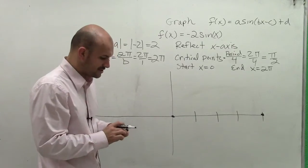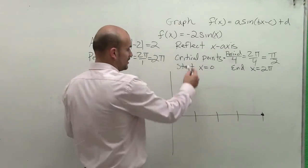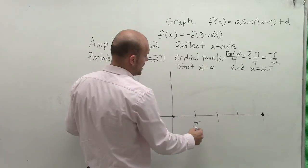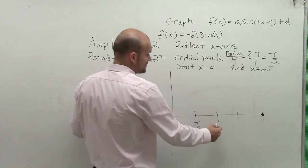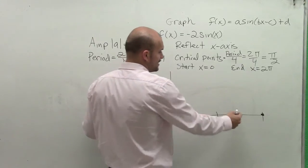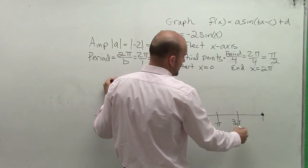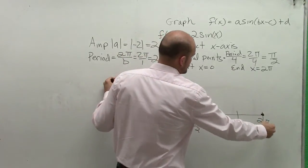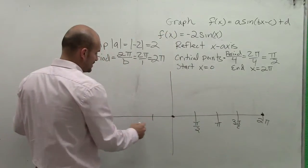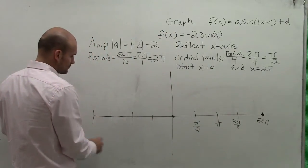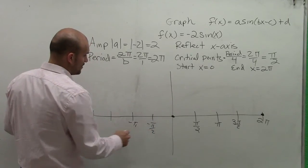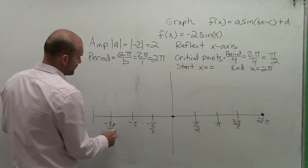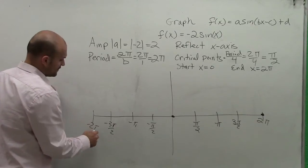So what I'm going to do is I'm going to first set up my critical points. So we know that the distance for each critical point is π/2. So I have π/2. This distance from here to here is π/2, which is π. And another π/2, I have 3π/2, and then I have 2π. Now I'm also going to do this in the negative direction. So I have -π/2, -π, -3π/2, and -2π.